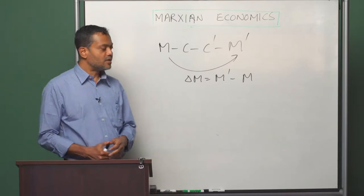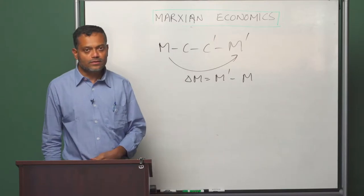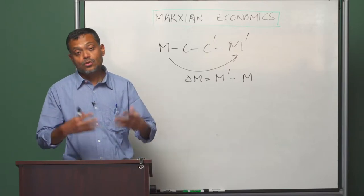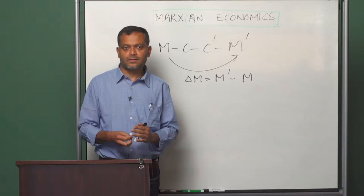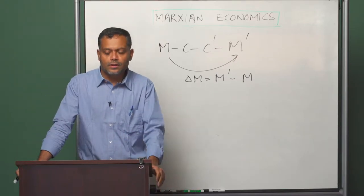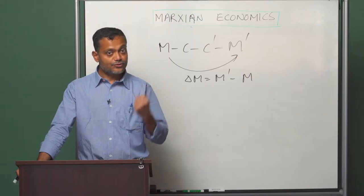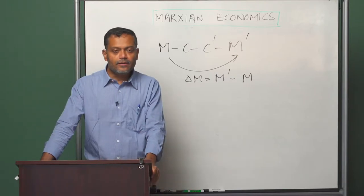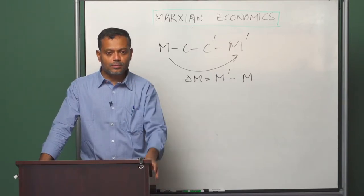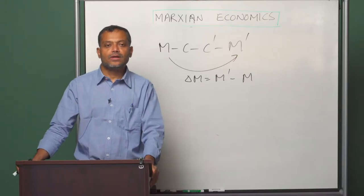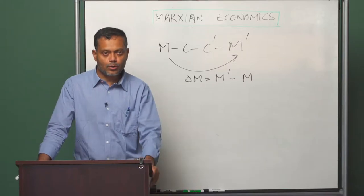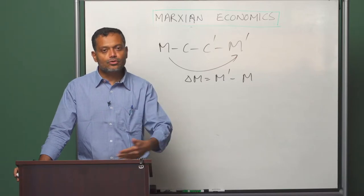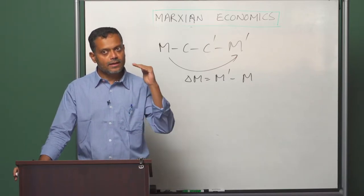Now we want to ask the question: what does the capitalist system do with the surplus value that it has generated? There are two things that the capitalist system can do with the surplus value — either it can consume it, or it can invest it. If the capitalist system consumes all the surplus value it has generated, then we have a scenario that Marx refers to as simple reproduction. Simple reproduction means all the surplus value is consumed and therefore the production process carries on at the same scale.